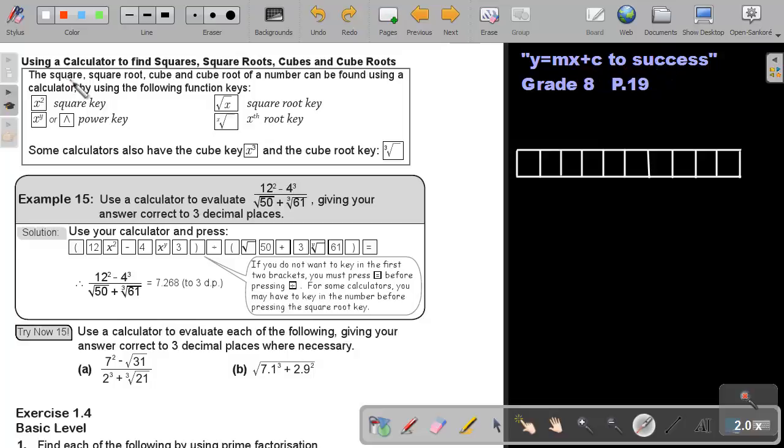Now, the square, square root, cube and cube root of a number can be found using a calculator by using the following function keys. This is the key for square, anything to the power of 2. If you must press anything to the power of 3 or 4 or 5, then you will use this key, or some calculators this key.